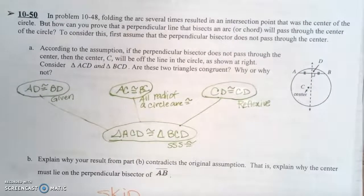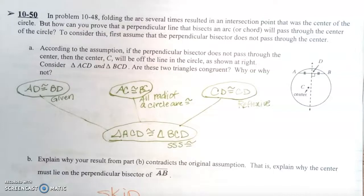Question 50 says in Problem 48 folding the arc several times resulted in an intersection point that was the center of the circle. But how can you prove that a perpendicular line that bisects an arc or chord will pass through the center of the circle? To consider this, first assume that the perpendicular bisector does not pass through the center.